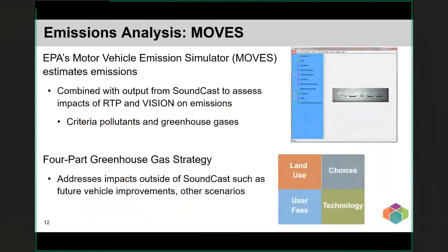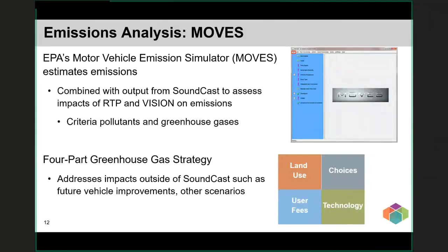We use EPA's emissions software called MOVES to estimate emissions from a variety of air pollutants including greenhouse gases. We utilize travel data from Soundcast — volumes traveling on different facilities at different speeds and by different types of vehicles — and apply emission rates from MOVES to estimate total emissions. In addition to this system-based analysis, we also developed a four-part greenhouse gas strategy which analyzes greenhouse gas emissions beyond the current and planned transportation network and vehicle fleet, providing an opportunity to analyze different scenarios for the future, such as expectations of improved vehicle technologies out to 2040 or 2050.